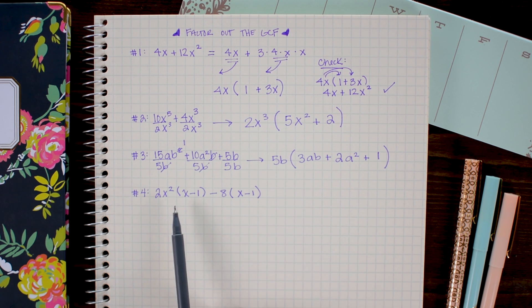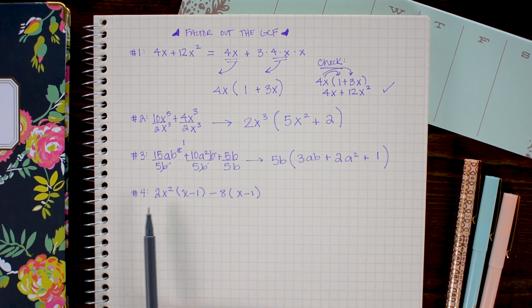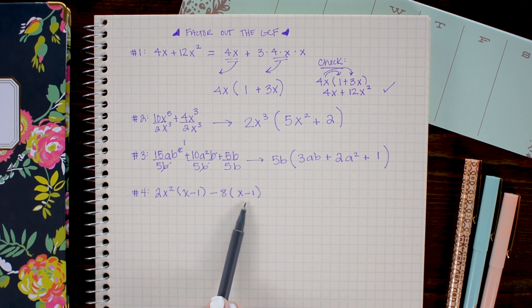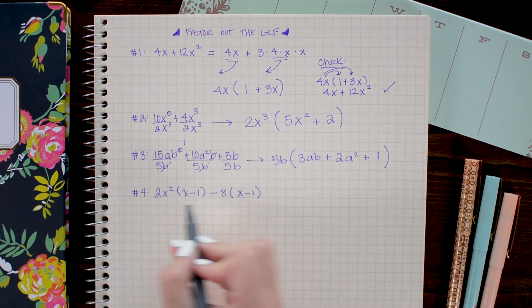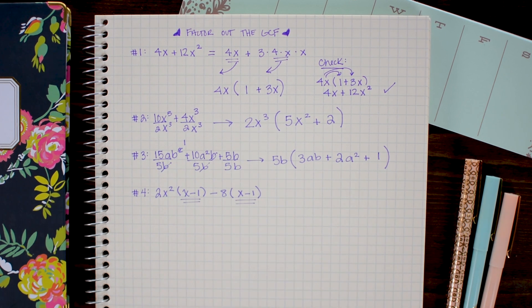Here I have a slightly trickier problem. For the most part it just looks really hard, but actually it's pretty straightforward. So what I have is 2x squared times the quantity x minus 1 minus 8 times the quantity x minus 1. So here you see that I have an x minus 1 in both of these terms.